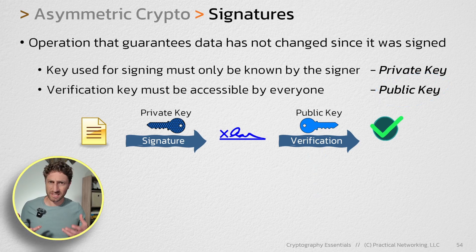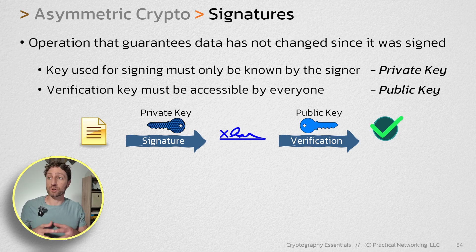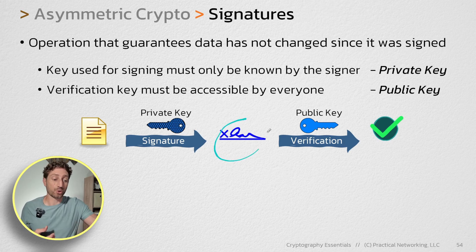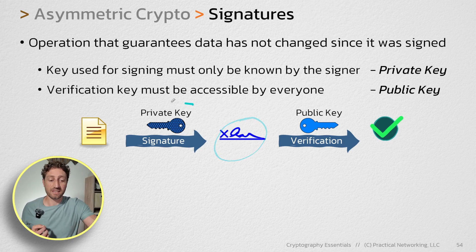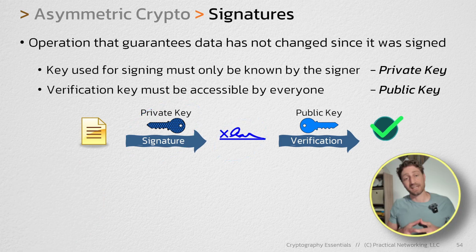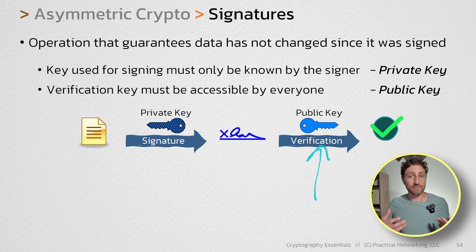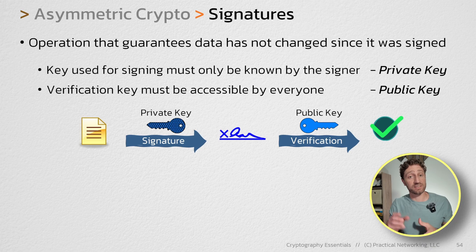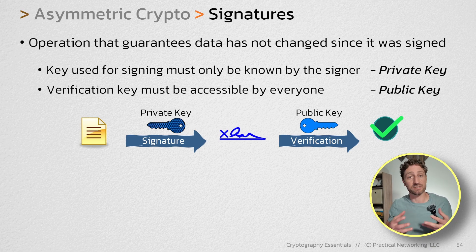And if you think about it, that's the only thing that makes sense. Think about your passport or your driver's license — only you should be able to create the signature on that document. And in the case of digital signatures, it's the same way. The only person that should be able to create a digital signature is the only person that has the private key, which in theory has never been shared with anybody else. And on the other side, verifying the signature only makes sense if you can do it with the public key. You want anybody in the world to verify the signature on your passport or driver's license, and it's the same with digital signatures. The public key is the only thing that makes sense to use to verify a signature.